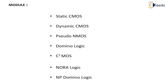In Module 1, we will be learning about the different MOS circuit styles — in what way your MOS is built. This includes static CMOS, dynamic CMOS, pseudo-NMOS, domino logic, C-square MOS, and P-domino logic. These are the different design styles. We can make a simple inverter using any of these styles, and each different style will have its own advantages as well as disadvantages. So Module 1 will be dealing with all these different design styles.